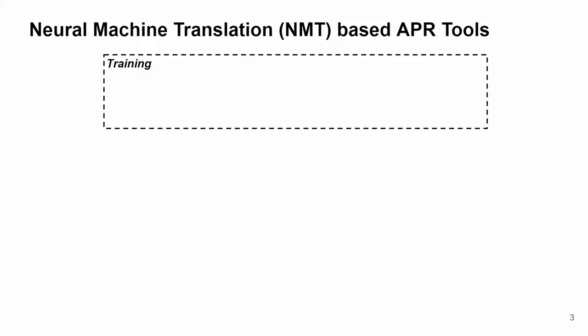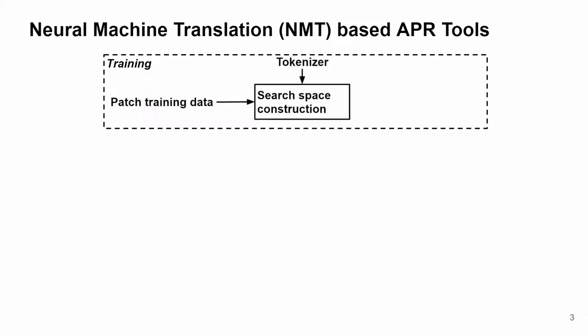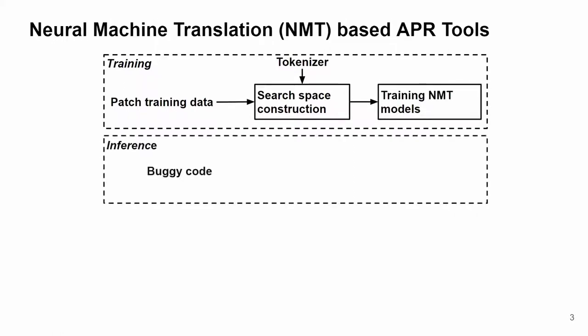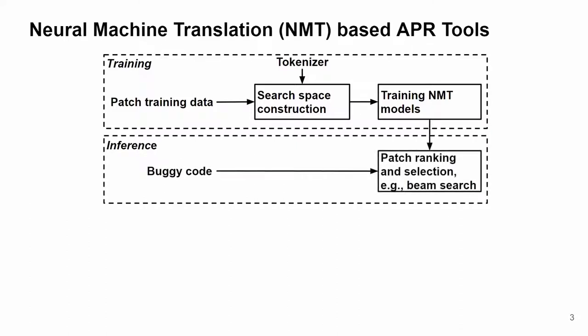These NMT-based tools first use their patch training data and a tokenizer to construct the search space, and then use the training data to train NMT models. And in practice, for a given bug, they use the trained NMT models to rank patches in the search space, and use a search strategy to select candidate patches. Since finding the patches of highest score is exponentially expensive, these tools choose to use BeamSearch strategy.